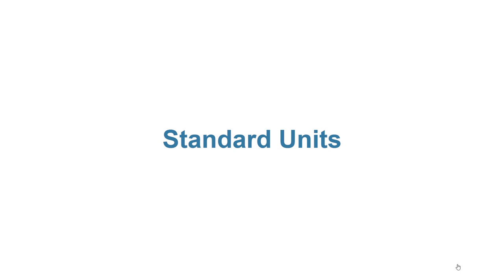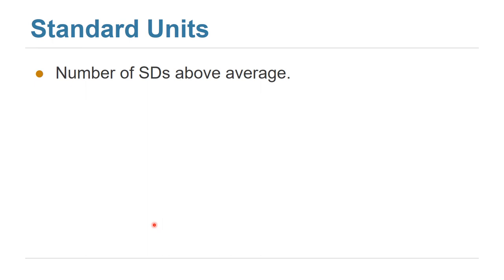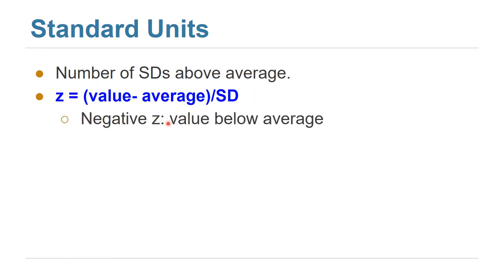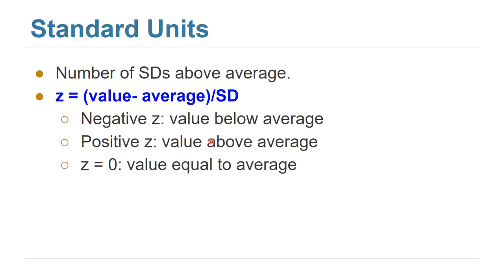Let's start with standard units. Standard units is the number of standard deviations above average. To compute the standard units of a value in a collection of values, we subtract the average and divide by the standard deviation. We call this value Z. So that's how many standard deviations this value is far from the average. If Z is negative, the value is below average. If positive, it is above average. If zero, it is equal to the average.